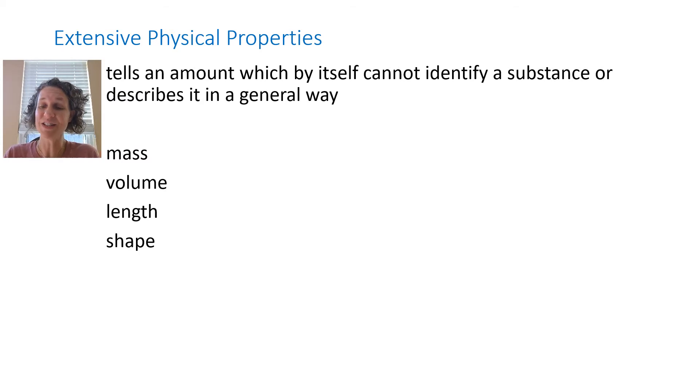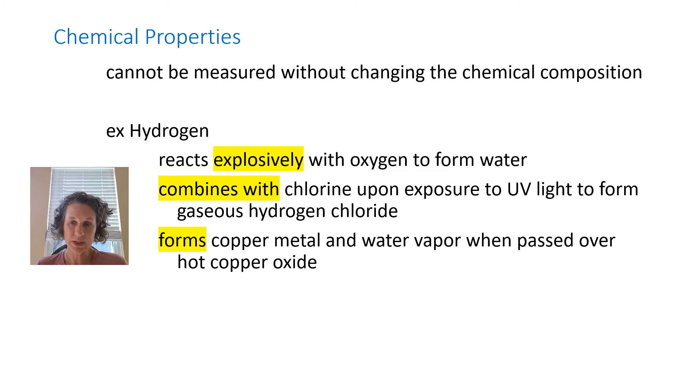Chemical properties: these are properties that once you figure out that they are that substance, then you've changed it because they cannot be measured without changing the chemical composition. You're going to look for words like it reacts explosively, combines with, forms. In all of these, like that first one: hydrogen reacts explosively with oxygen to form water. So those two things do combine to form water, but once I combine them I don't have hydrogen anymore. I have it in water along with the oxygen, so you're changing the substance once you have done this chemical reaction. You know what it is but then you don't have it anymore.